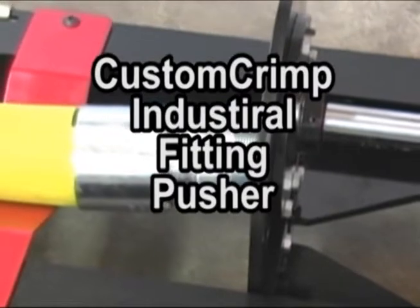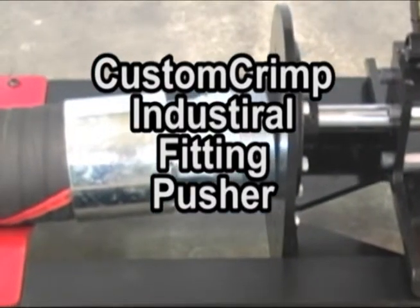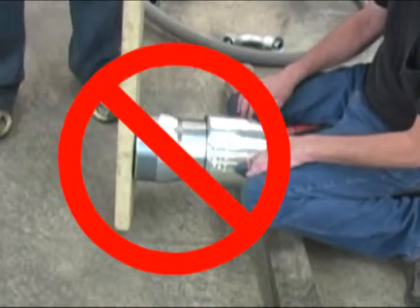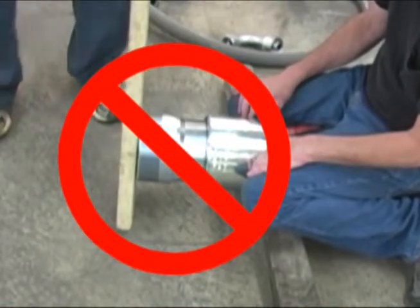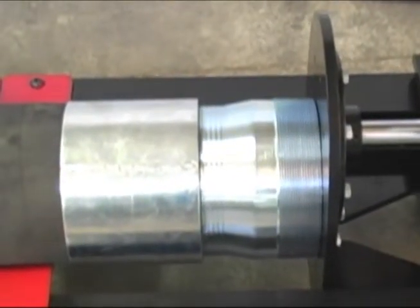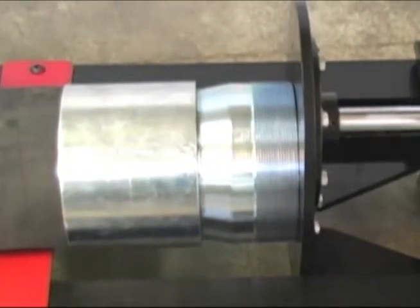Before setting up crimp parameters for industrial hose, however, you first need to prepare the hose for crimping and insert the appropriate fitting. This can often be a time-consuming and frustrating process. The Custom Crimp Industrial Fitting Pusher can greatly simplify and speed up the fitting insertion process.